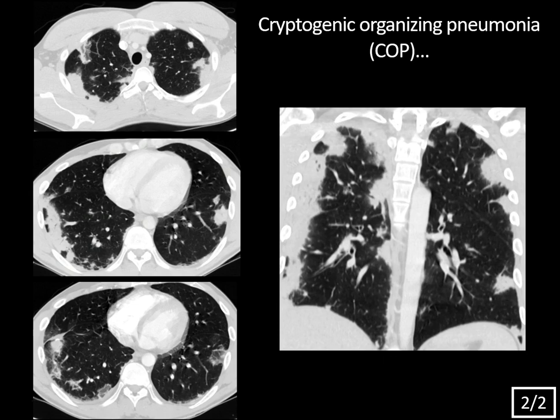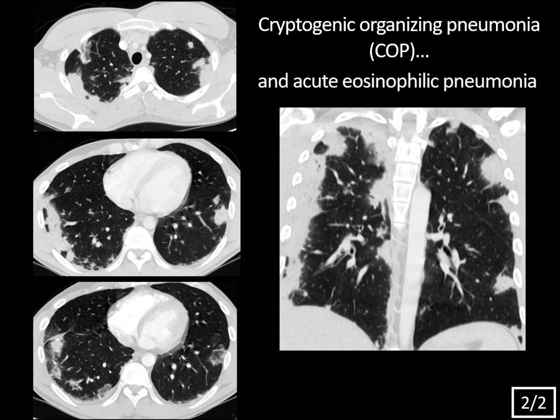COP can also coexist with NSIP (nonspecific interstitial pneumonia), which can also have subpleural sparing — which may explain why we get that same feature sometimes in COP. You can also get perivascular or peribronchial nodular densities, and lobular sparing or perilobular lines. These patients often present with a subacute time course — symptoms for two to three months before diagnosis — and treatment is typically corticosteroids. One of your main differentials for peripheral consolidative opacity would include eosinophilic pneumonia; interestingly, this patient on tissue diagnosis had coexisting acute eosinophilic pneumonia, making this a mixed lung injury pattern.